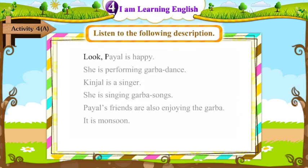Look, Payal is happy. She is performing Garba dance. Kinjal is a singer. She is singing Garba songs. Payal's friends are also enjoying the Garba. It is monsoon.